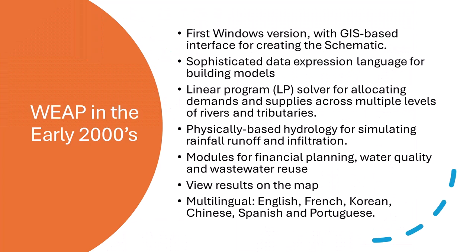In 2000, SEI created the first Windows version with a GIS-based interface for creating the schematic, a sophisticated data expression language for building models, and a linear program solver for allocating demands and supplies across multiple levels of rivers and tributaries. Beyond a simple accounting framework for demands and supplies, it included a physically-based hydrology for simulating rainfall runoff and infiltration, and modules for financial planning, water quality, and wastewater reuse.